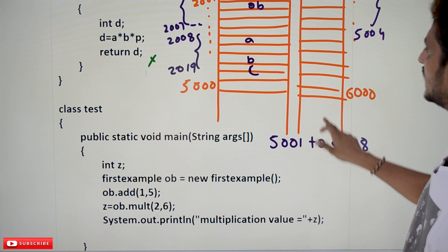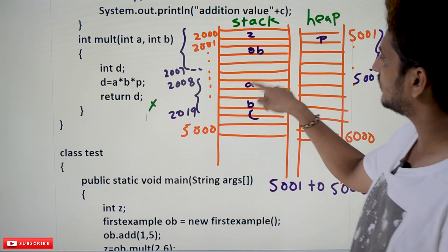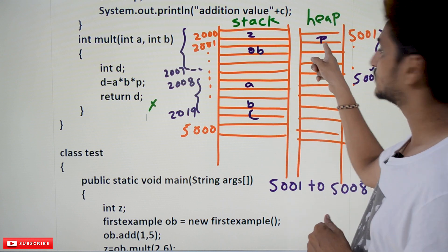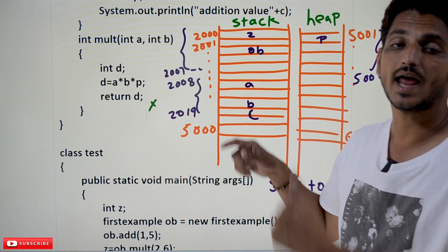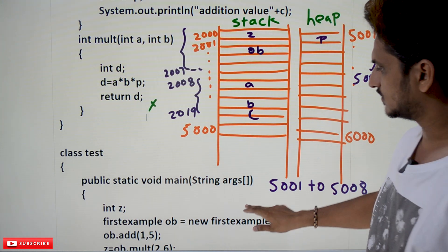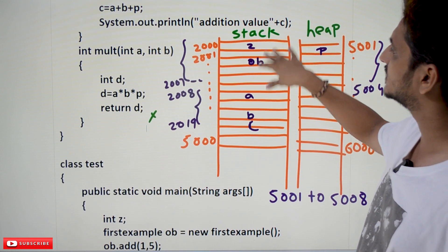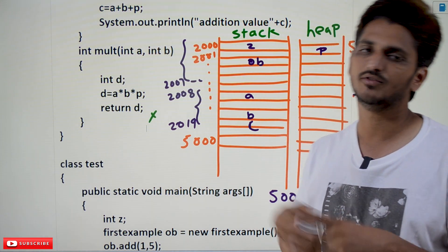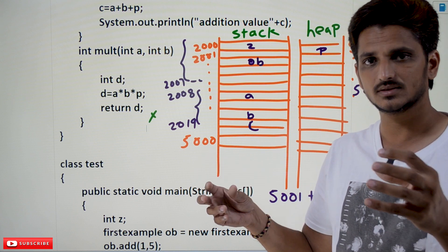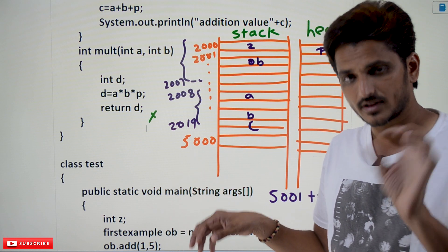That's why instance variables are global variables — because the heap space is allocated and remains available after completion of the add method and after completion of the multiplication method. Any method can access this instance variable. After completion of the main method, the space allocated for the main method is also deleted, meaning you can use that space for other methods. This is how we use stack and heap space — objects are allocated in heap space and variables present in methods are allocated in stack space.